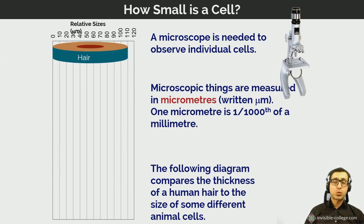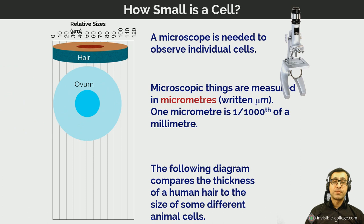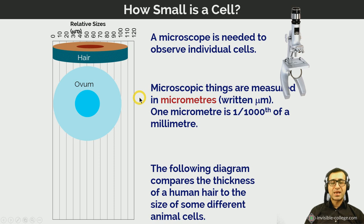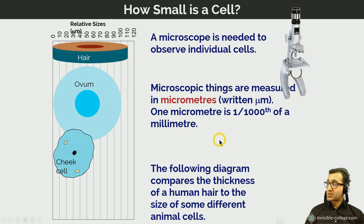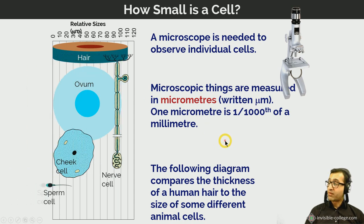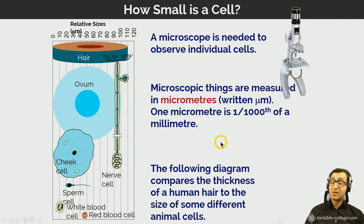This diagram compares the thickness of a human hair to the sizes of different animal cells. The largest human cell is the ovum — the female gamete — which is just a tiny bit smaller than the thickness of a human hair and can just about be seen with the naked eye. In contrast, cheek cells are a bit smaller, nerve cells are very long but very thin, sperm cells are very small, white blood cells are quite small, and red blood cells are extremely small.